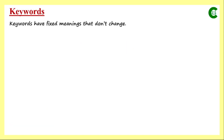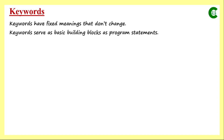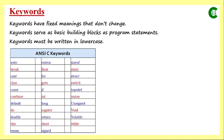First we will start with keywords. Keywords are those words in our programs which are fixed — their meanings are fixed, they don't change. Keywords serve as basic building blocks in our program statements. Keywords must be written in lowercase; otherwise we will get an error. This is a list of ANSI C keywords that we have to remember, which will be helpful for us.